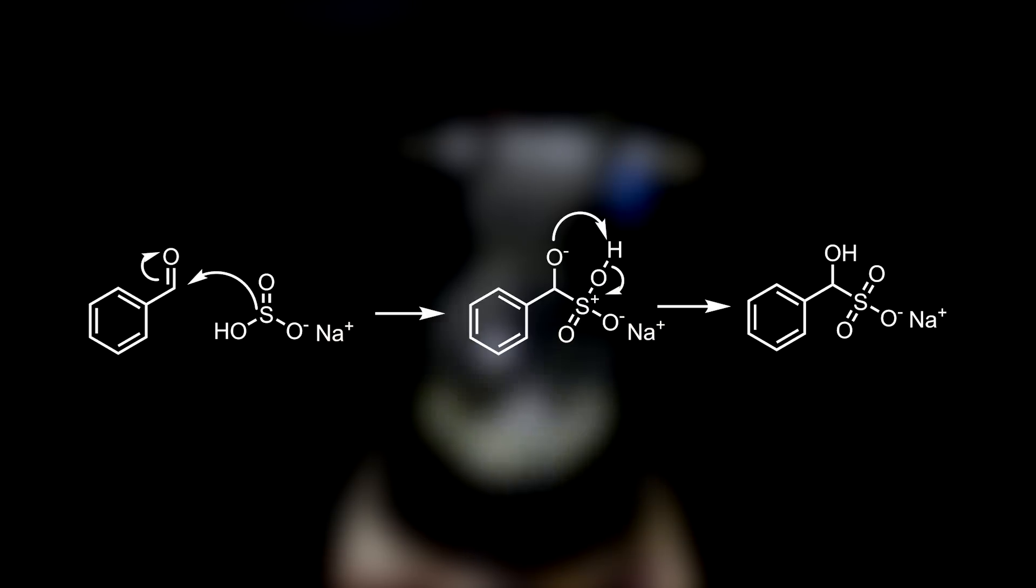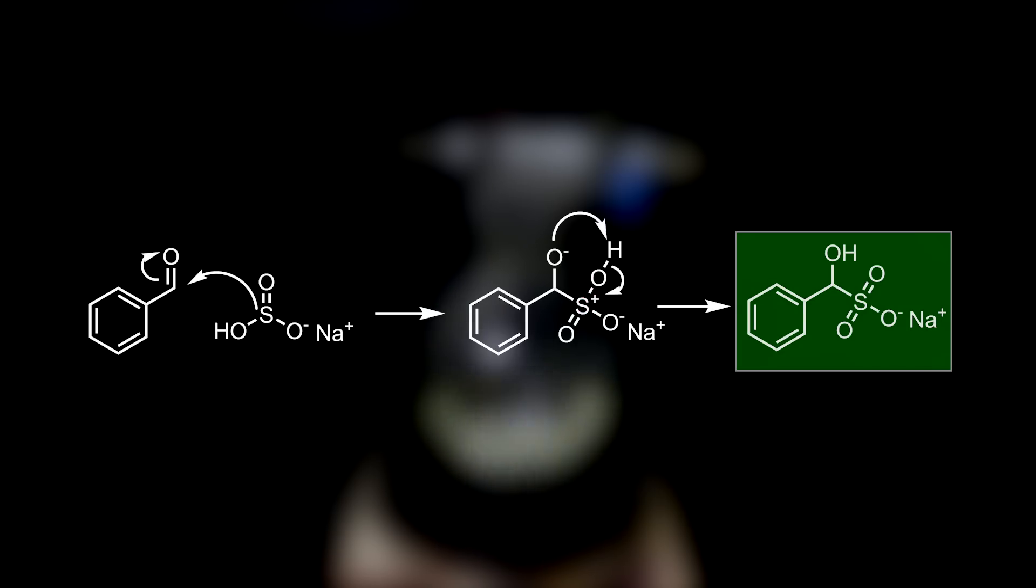The way it works is that the bisulfite ion is weakly nucleophilic, which is only strong enough to attack an aldehyde or methyl ketone carbonyl carbon. After the attack, one of the electron pairs from the carbonyl double bond moves onto the oxygen, which then takes up a proton from the bisulfite. Those bond electrons then move to make a sulfur-oxygen double bond to balance the charge on the sulfur, giving the final bisulfite adduct.